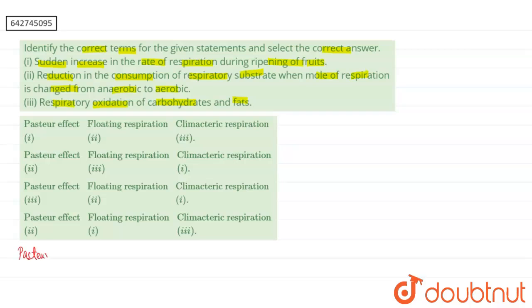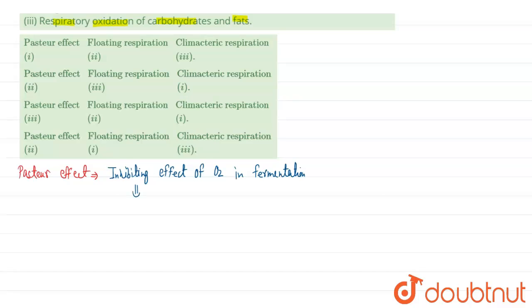In our question, three terms are mentioned. The first term is the Pasteur Effect. The Pasteur Effect is generally represented as the inhibiting effect of oxygen on the process of fermentation. Oxygen shows an inhibiting effect on the process of fermentation, which is an example of anaerobic respiration. In the Pasteur Effect, anaerobic respiration — which occurs in the absence of oxygen — is changed to aerobic respiration when oxygen is present. This was discovered by the scientist Louis Pasteur, which is why it is known as the Pasteur Effect.